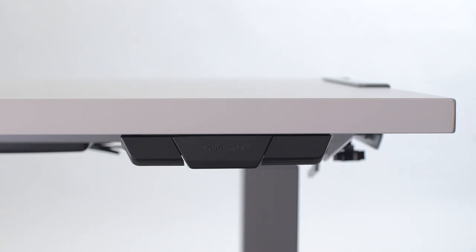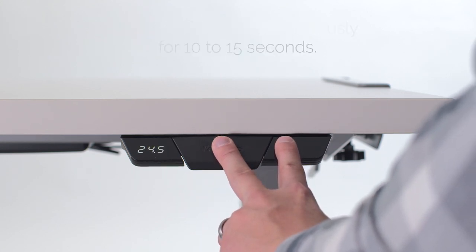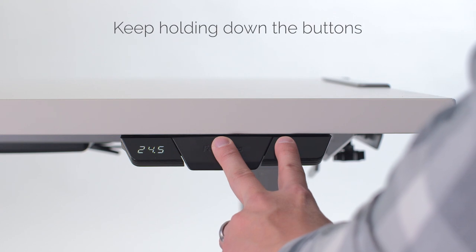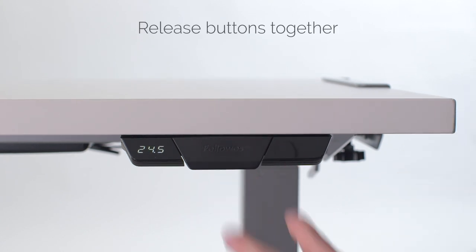Begin the initialization process by pressing and holding down the paddle and M buttons simultaneously for 10 to 15 seconds. Keep holding the buttons and the legs will move down to their lowest position, then rebound a few millimeters up and stop. You can now release both buttons together.